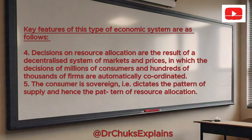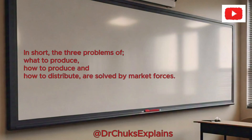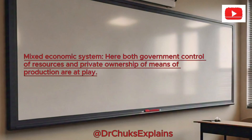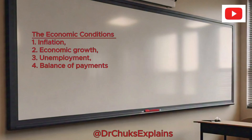The consumer is sovereign, i.e. dictates the pattern of supply and hence the pattern of resource allocation. In short, the three problems of what to produce, how to produce and how to distribute are solved by market forces. A mixed economic system is where both government control of resources and private ownership of means of production are at play.